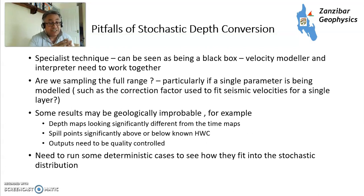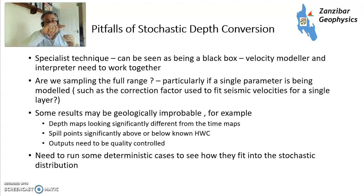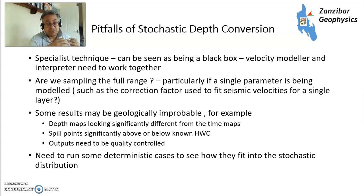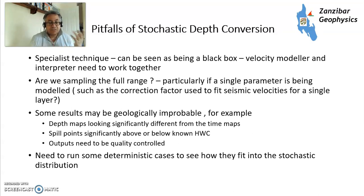One thing that happened to me with a stochastic depth conversion on a North Sea field with horizontal wells: in the initial results, some realizations had the horizontal wells poking out the side of the reservoir — the well came in an L-shape and exited the reservoir, which didn't happen in reality. I talked to the person doing the work, we re-ran some of the parameters, and then all realizations fit into all the wells properly. You'll also need to run some deterministic cases just to see how they fit into the stochastic distribution to make sure you've got everything right.